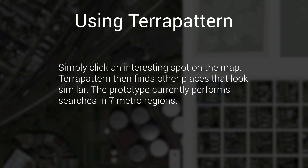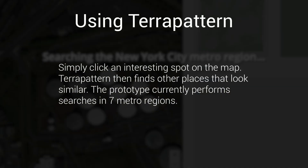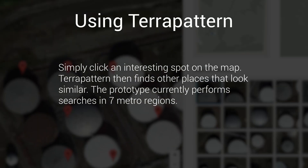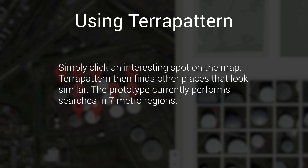To use TerraPattern, just click an interesting spot on the map. TerraPattern then finds other places that look similar.